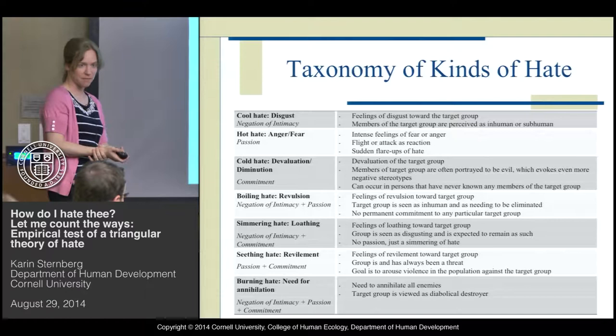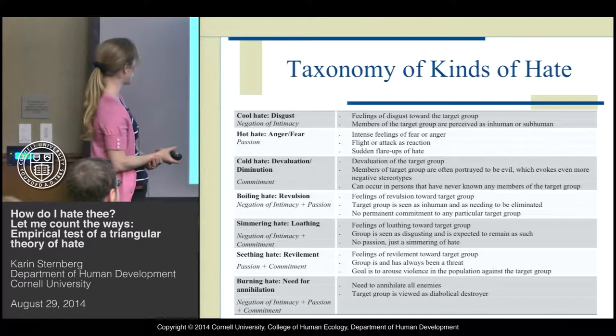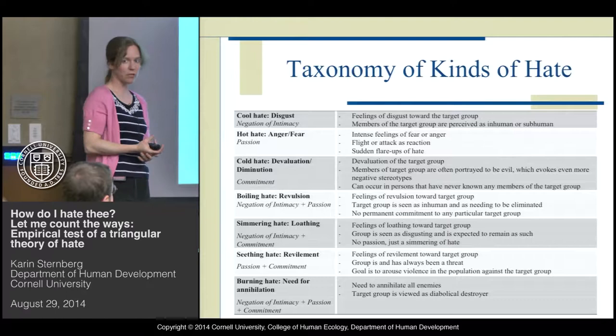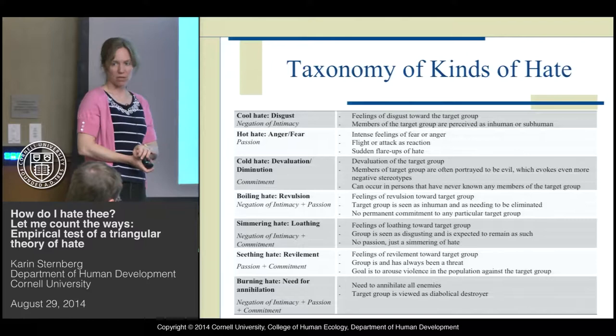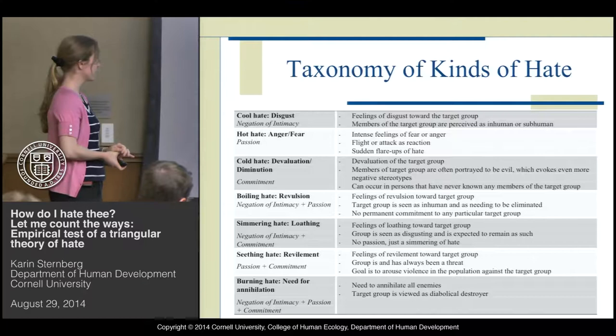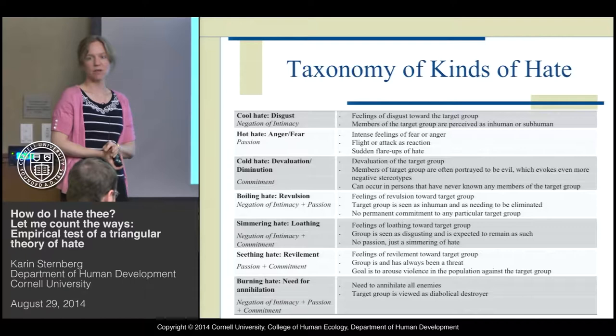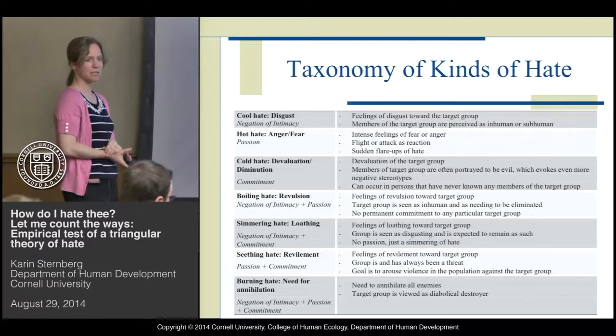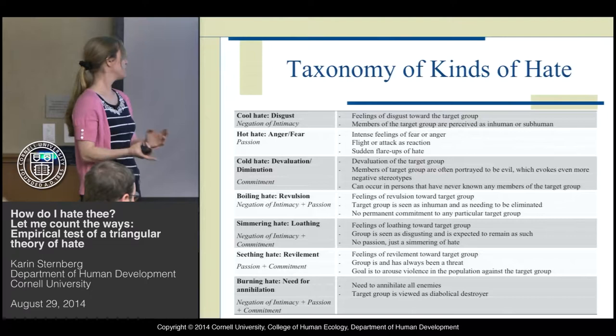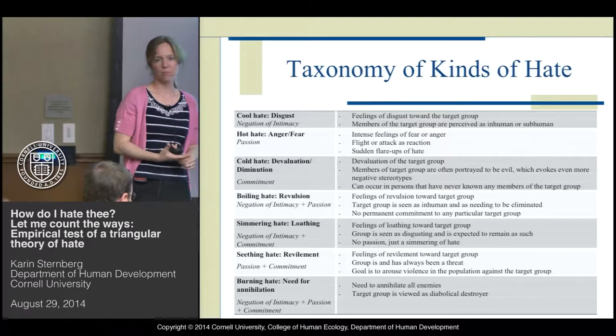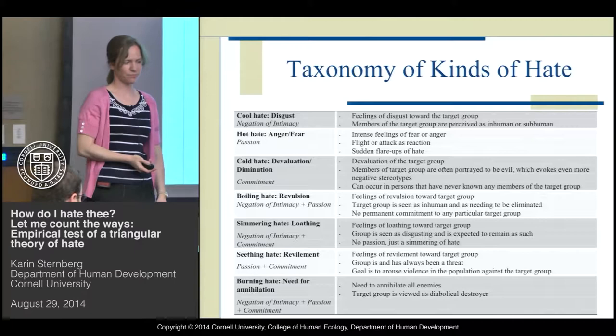The other kinds of hate include: cool hate, which is just negation of intimacy with no real affect present; hot hate, which consists of the passion component — anger and fear; cold hate, when only the commitment component is present; boiling hate, which combines negation of intimacy and passion; simmering hate or loathing, which is negation of intimacy combined with commitment; and burning hate, or the need for annihilation, which has all three components — negation of intimacy, passion, and commitment.